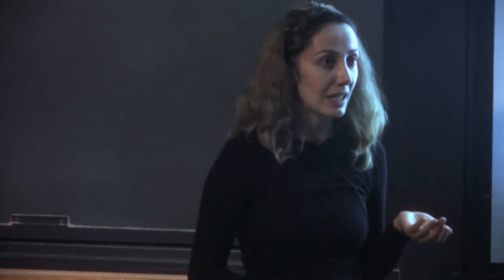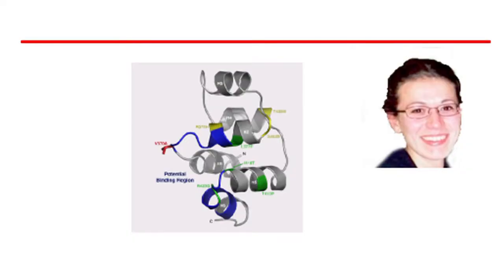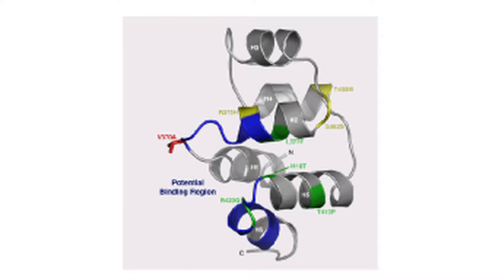In humans, EDAR doesn't obviously regulate scales, but it regulates another ectodermal function — it regulates hair, sweat, and teeth. There's a disease called hypohydrotic ectodermal dysplasia: if you knock out that gene, you have basically no body hair, no sweat glands, and malformations of teeth. That's how we know what the function is. In Asia, where EDAR is under selection, we've been investigating what might be going on. In our 2007 paper with Yana Kamberov and Cliff Tabin, we showed that the mutation lies in a very important binding domain of the gene.